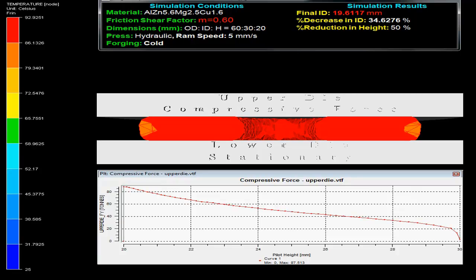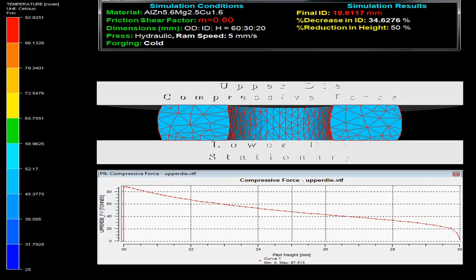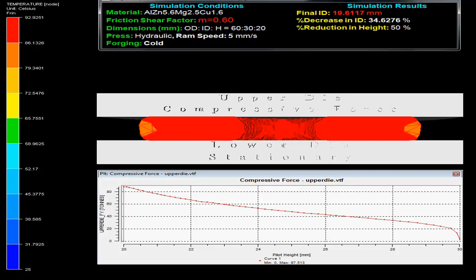The hydraulic press uses a ram speed of 5 mm per second, and forging is done cold.